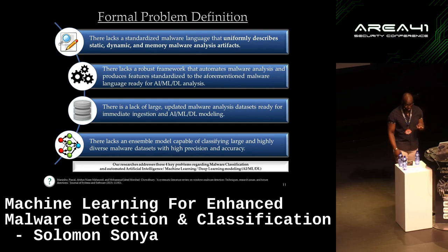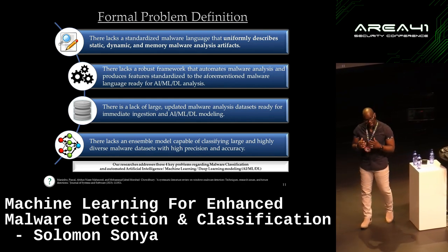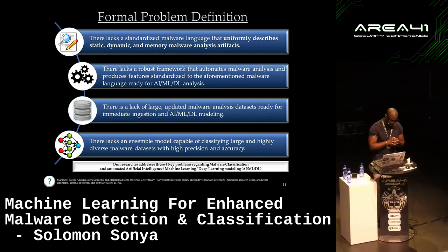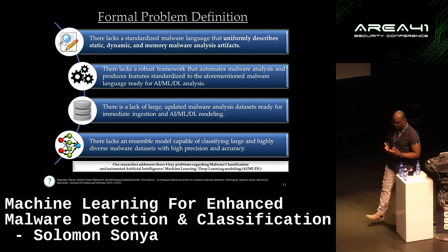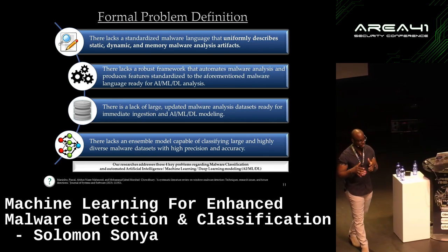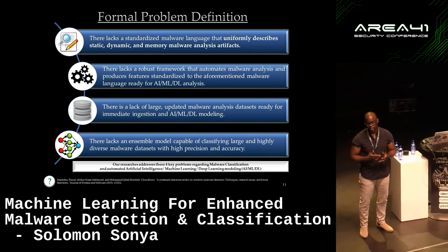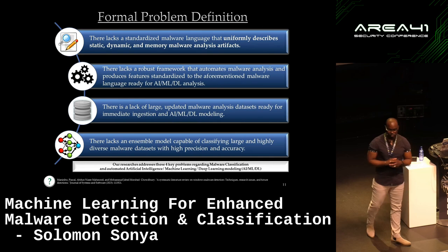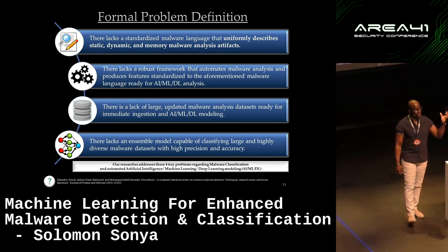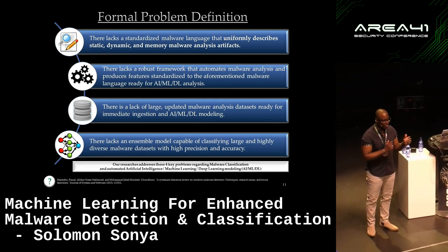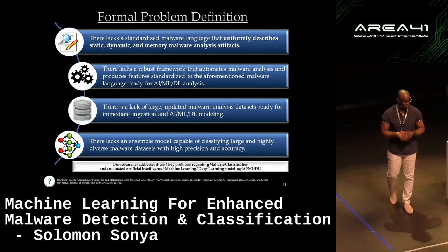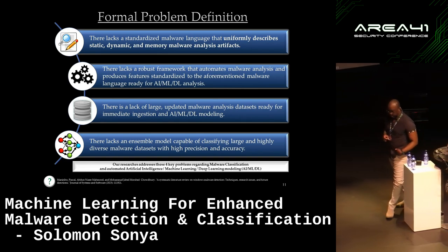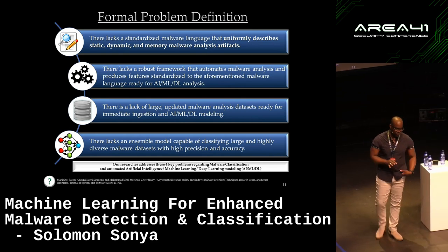Number two: we do not have a good language describing this, and there's no system that helps us automate the creation of data sets that we can pivot into analysis. Number three: we also do not have a large corpus of already pre-computed data for analysis. If you look at the literature, many people are still relying on downloaded corpus from 10 or 15 years ago — 2010 Ember data sets — and that's what we're still seeing in publications today. And lastly, there lacks an ensemble model able to classify large and disparate data sets while still providing high precision and accuracy.